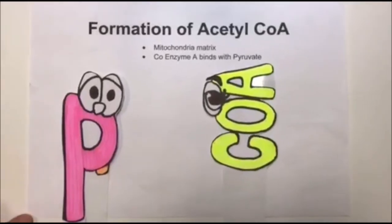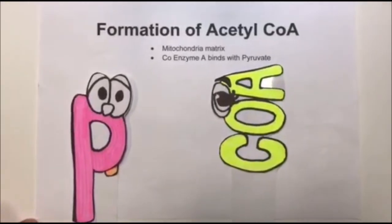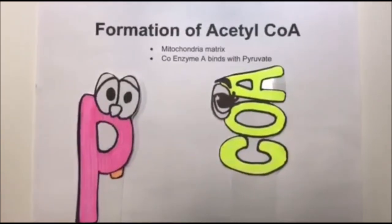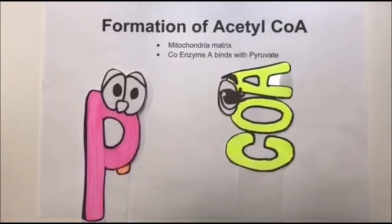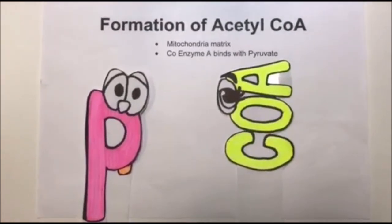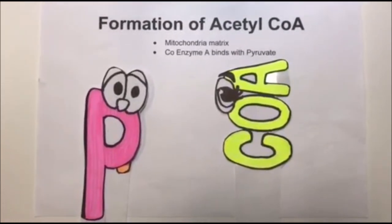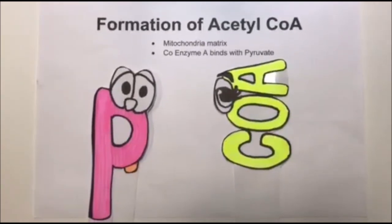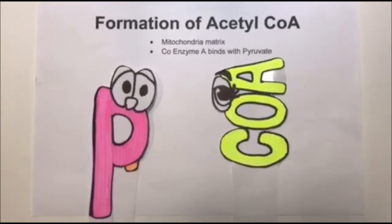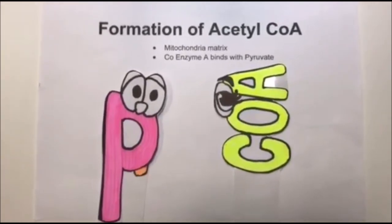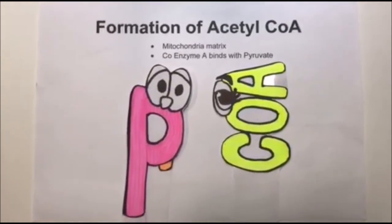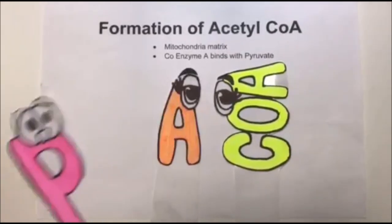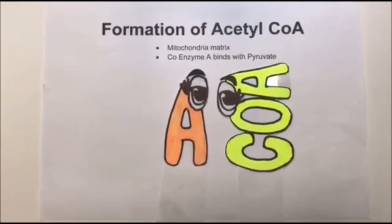Next, we have formation of acetyl-CoA. This takes place inside the matrix of the mitochondria. This is also where coenzyme A binds with pyruvate, which forms acetyl-CoA.